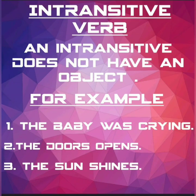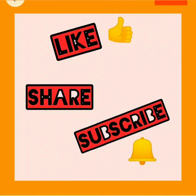An intransitive verb does not have an object. For example: 'The baby was crying' — the baby does not need any object to cry. Intransitive verbs do not need any object to complete their action. For example: 'The door opens', 'The sun shines' — the sun does not need any object to shine. Thank you for watching. Please like, subscribe and share.